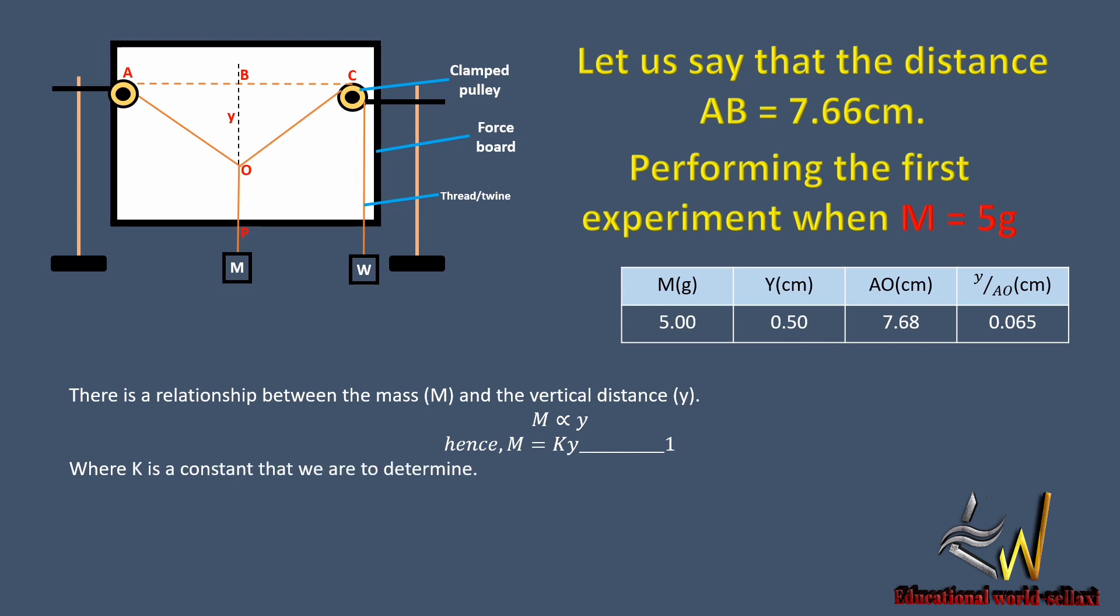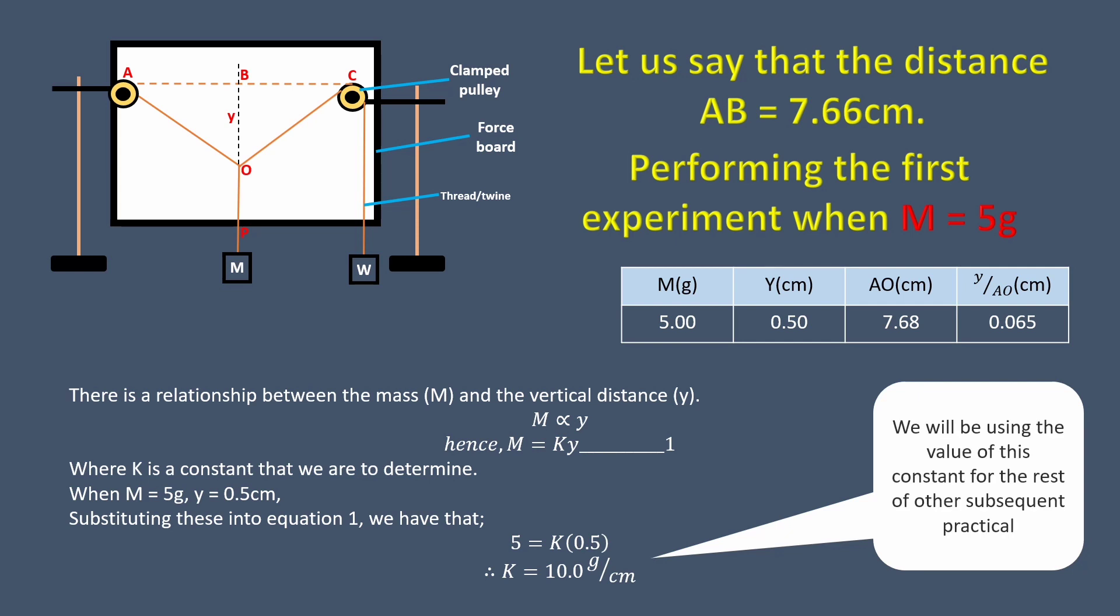And we are going to determine the value of that constant. So M equals 5 grams and y equals 0.5 cm. Substituting these into equation one, we have that 5 equals k times 0.5. So we are going to make k the subject of the formula. Simplifying it, we now have that k equals 10.0 grams per cm. So we'll be using this value for the rest of the practical.